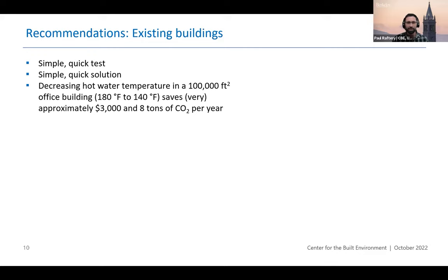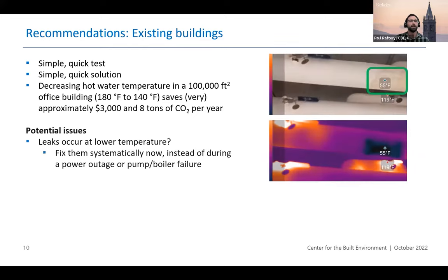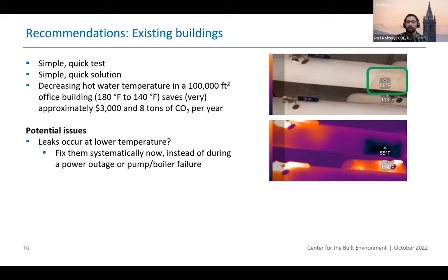Based on the data we have, in a 100,000 square foot building, dropping the supply water temperature by 40 degrees for a substantial portion of the year will save about $3,000 or 8 tons of CO2. That's obviously very approximate. The potential issues you can run into are that some of these systems do leak when you lower the supply water temperature, especially in older buildings 20, 30, 40, 50 years old. For that reason, many of these systems are operated 24-7 to avoid those leaks.